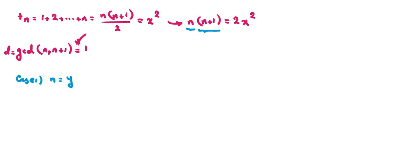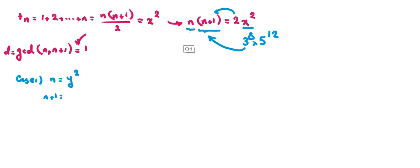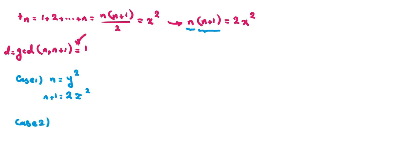Because the two numbers are relatively prime, each prime factor goes entirely to one of them — we cannot split prime powers between them. So one of them is a perfect square and the other is two times a perfect square. Case 2: n = 2w² and n+1 = m². We must analyze both cases.